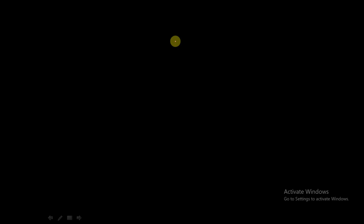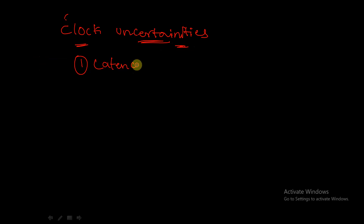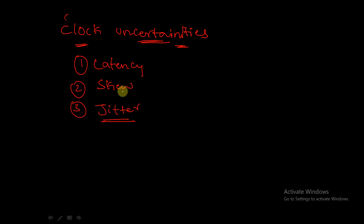Hello all, welcome back to this series on static timing analysis. Today we are going to discuss clock uncertainties. In clock uncertainties we will discuss the following things: the possible clock uncertainties — first one is latency, second one is skew, and the third one is jitter. We will discuss all these variations in the clock signals.